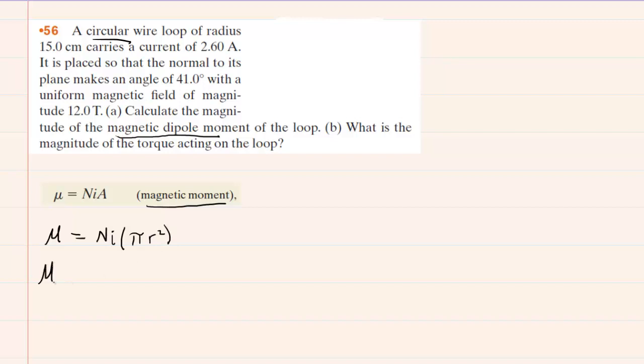Then it's simply a matter of plugging in the known values. This says that it is a loop, so that indicates the number of loops is just one. So capital N is one, multiplied by the current, that is given as 2.6 amps, and then multiplied by pi times the radius. The radius is given in centimeters, so make sure that you multiply that number by 10 to the negative 2. That will convert it into meters. Also, don't forget to square it.